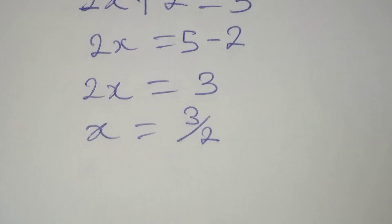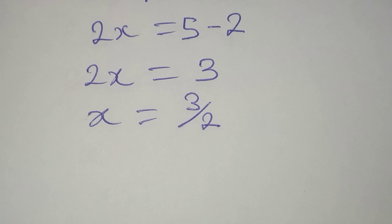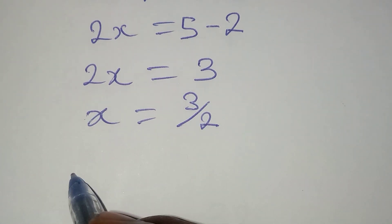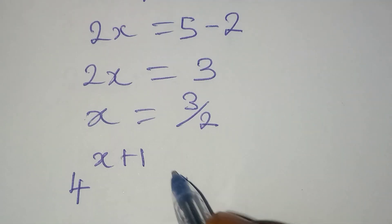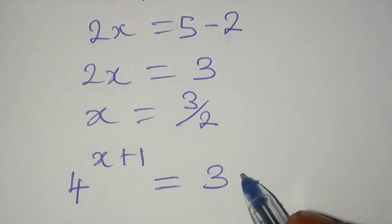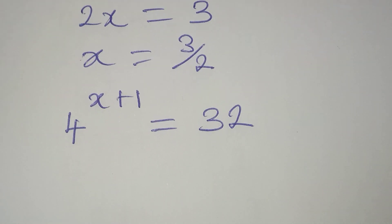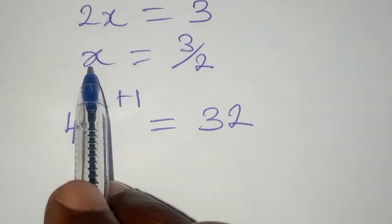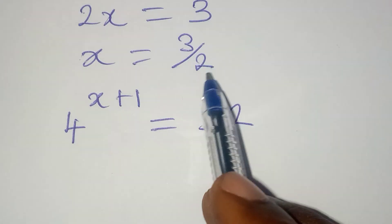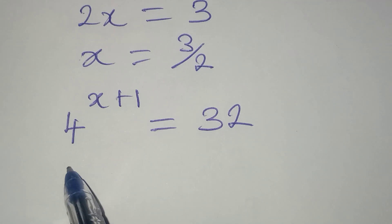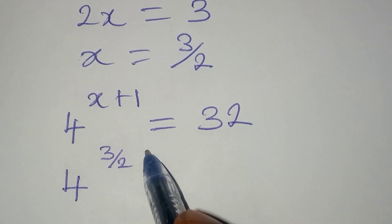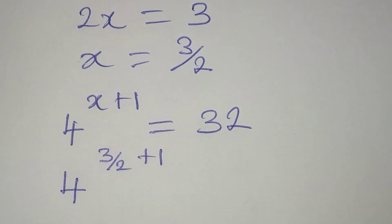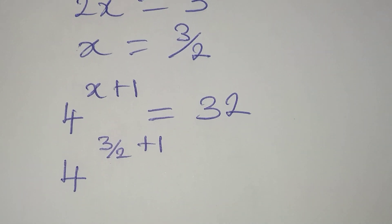But are we right in this calculation? The original equation was 4 to the power of x plus 1 equals 32. Let us put x equals 3 over 2 into this equation. We are going to have 4 to the power of 3 over 2 plus 1. Will this give us 32? Let's check.